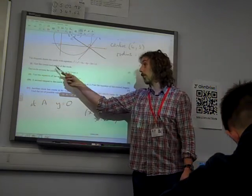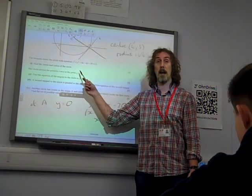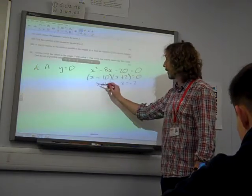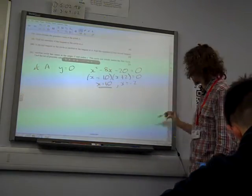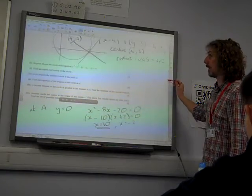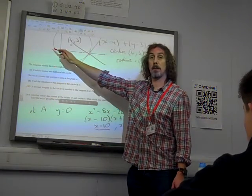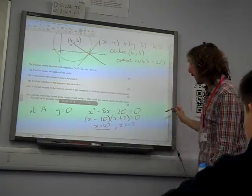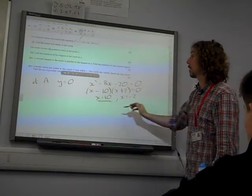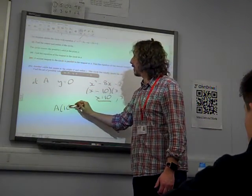So A is either the point where x equals 10 or x equals minus 2. The circle, of course, crosses the positive x-axis at the point A, so the A value must be positive. It must be 10. It's not the minus 2. That is, of course, that point there, isn't it, that we've just found out as being minus 2. So A is the point 10, 0.